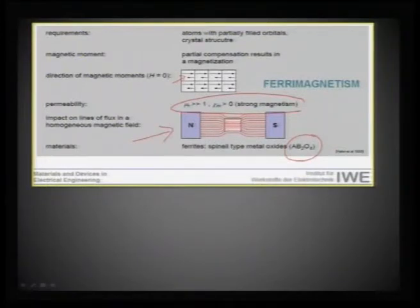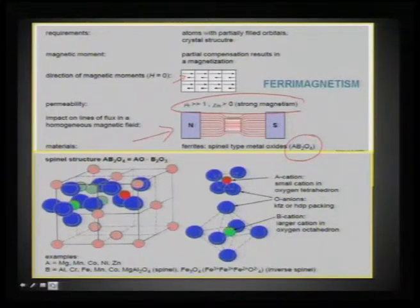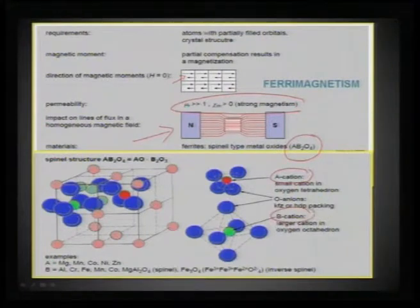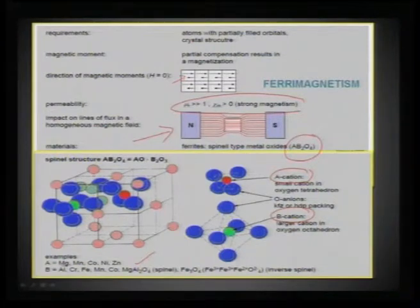A classic example of a ferrimagnet is the AB₂O₄-type metal oxide, called a spinel. Spinel ferrites show a very good ferrimagnetic response. In the unit cell of AB₂O₄, the A cations sit in tetrahedral sites and B cations sit in octahedral sites, and you can generate a variety of spinel compounds. This is a classic spinel that is a naturally occurring mineral, and ferrites of this formula can be made with divalent metal ions at A sites and trivalent metal ions at B sites.